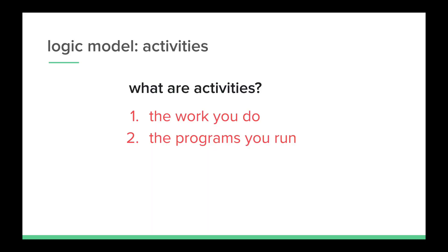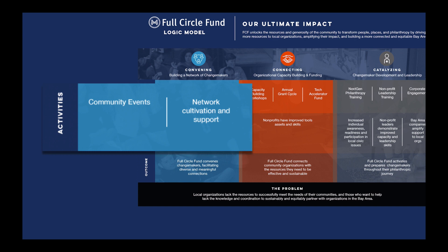We're going to start this process by looking at our activities. Simply put, they are the work that your organization does, and oftentimes they are paralleled with the programs that your organization runs. When you think about the activities for Full Circle Fund, they have a bunch, but we're going to focus in on one strategy group — the convening strategy group — and look at the two activities: community events, and network cultivation and support. These are the activities in that particular strategy that take place on a regular basis for Full Circle Fund to achieve their mission.